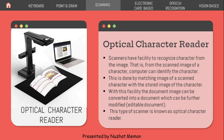Optical character reader (OCR): scanners have the facility to recognize characters from a scanned image. The computer can identify the character by matching the image of a scanned character with a stored image of the character. With this facility, a document image can be converted into an editable document that can be further modified.